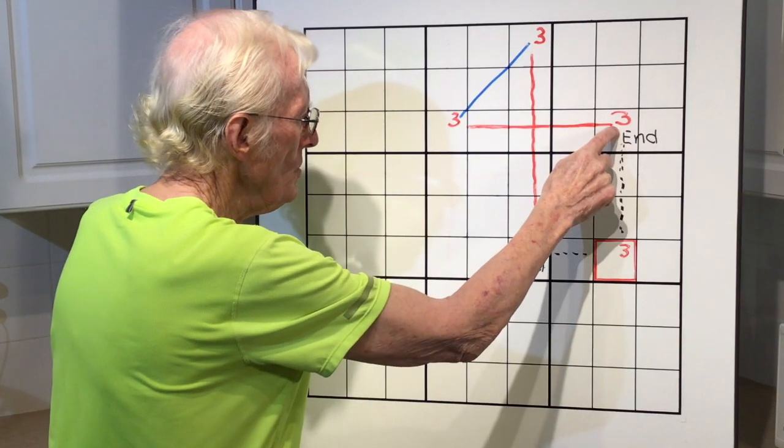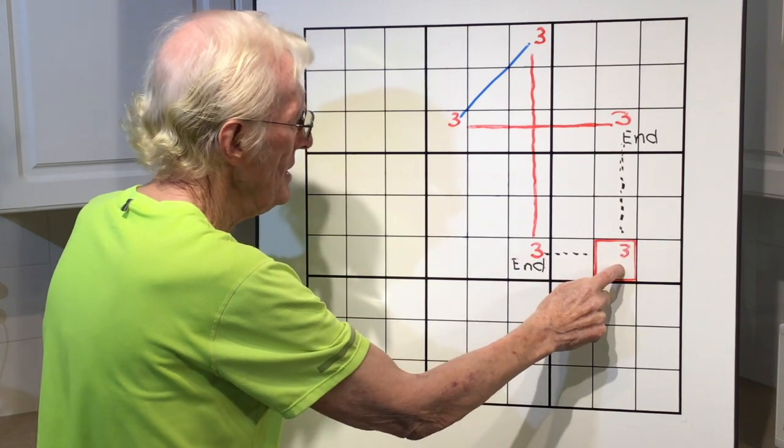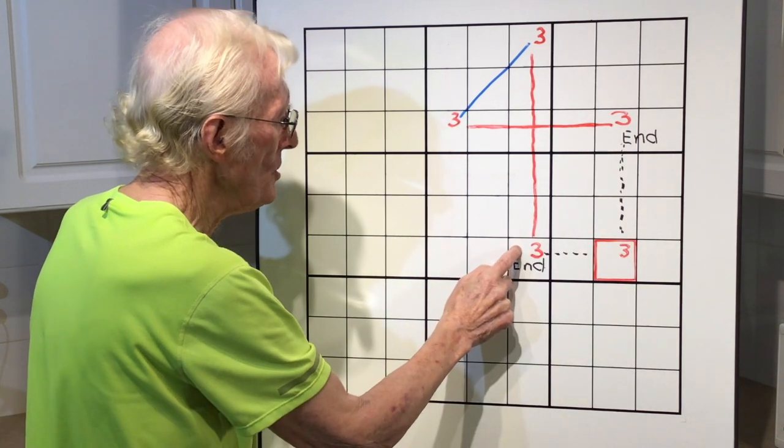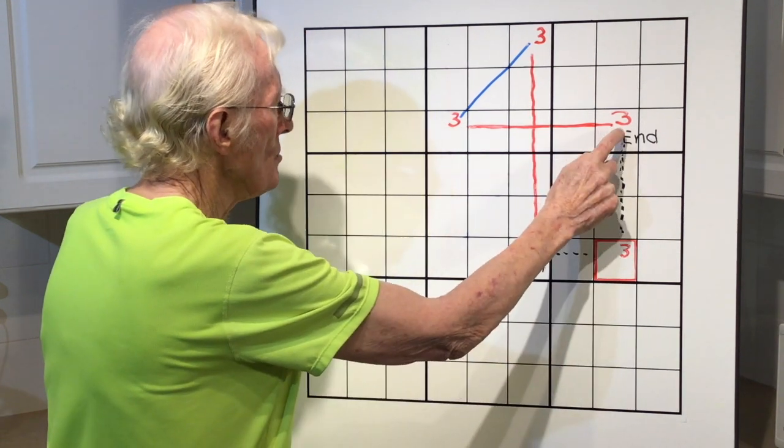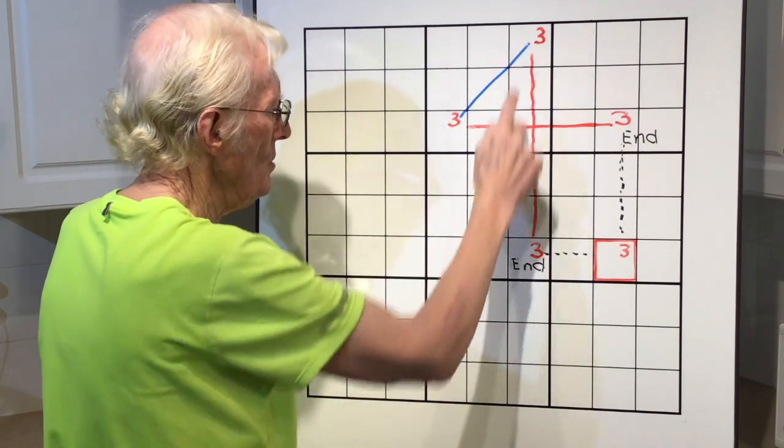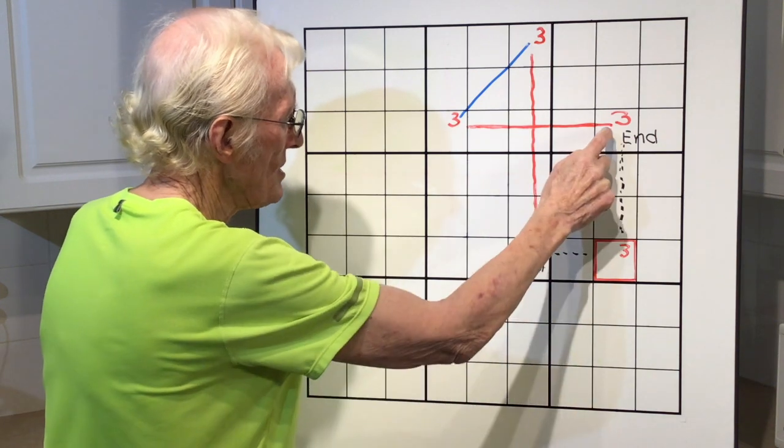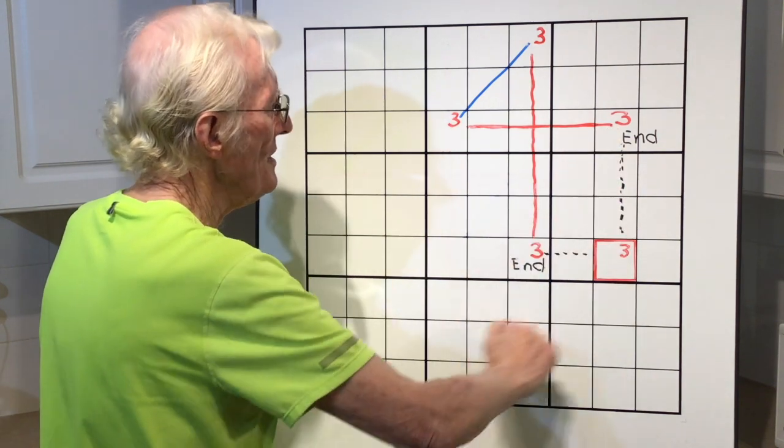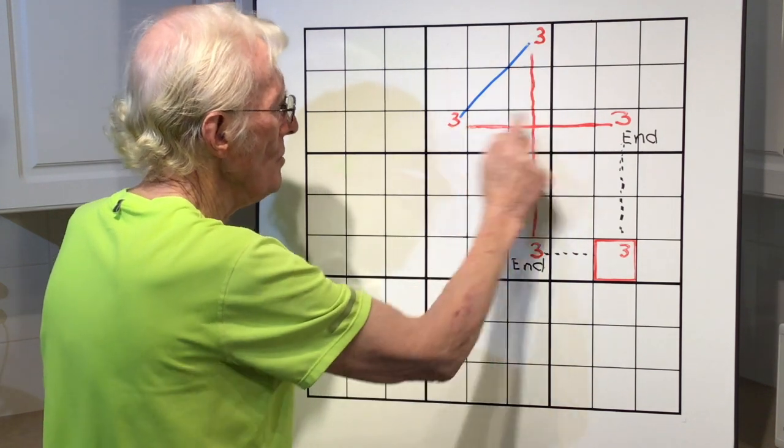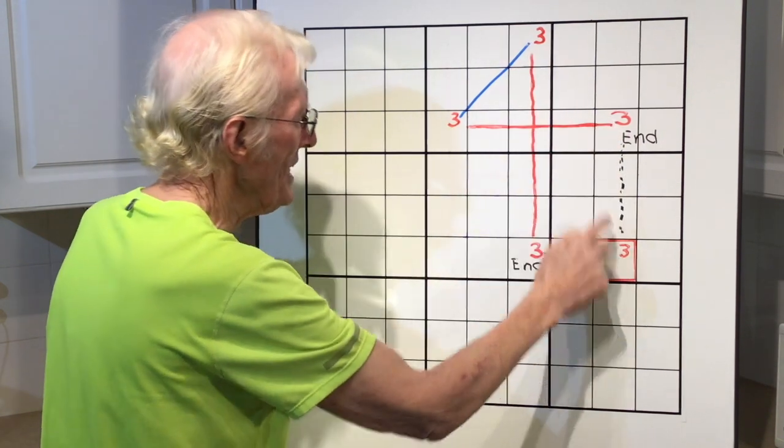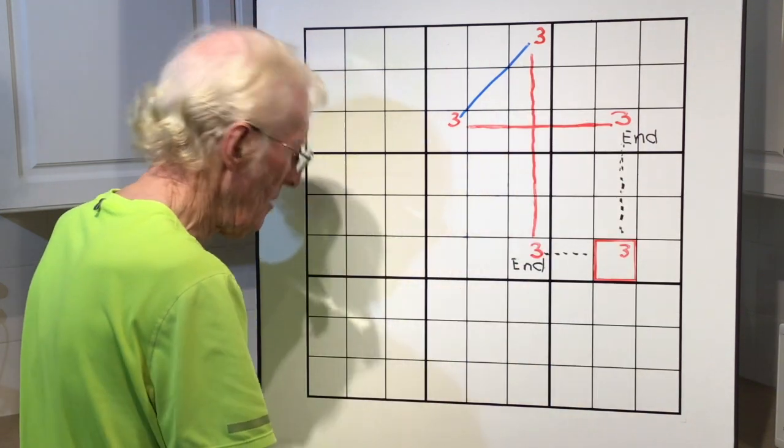If this is true, that can't be a 3. And if this is true, that can't be a 3. So if this is true, true, false, true, false, that means that they can't be there. If this is true, true, false, true, false, that can't be a 3. And in both cases, it cannot be a 3.